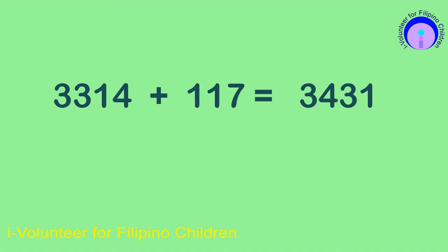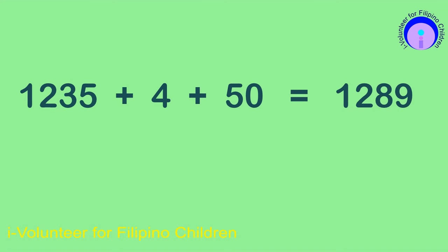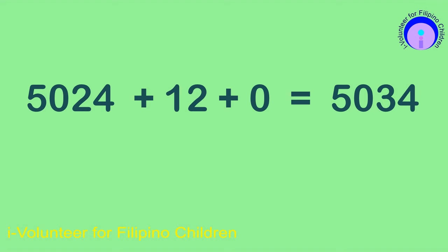3,314 plus 117 is equal to 3,431. 1,235 plus 17 is equal to 1,252. 5,024 plus 12 plus 0 is equal to 5,036.